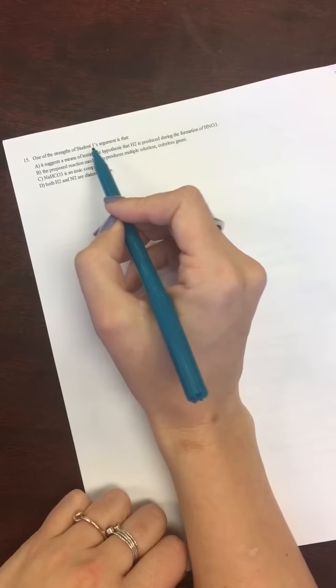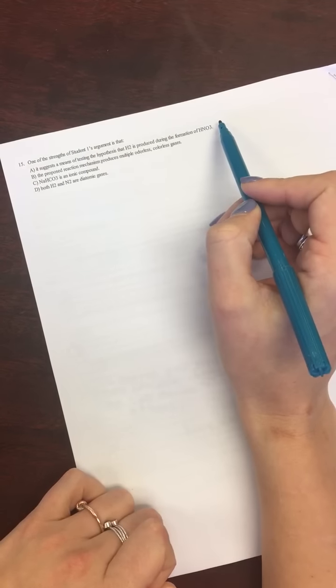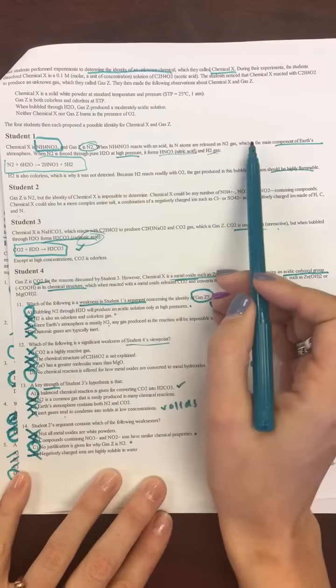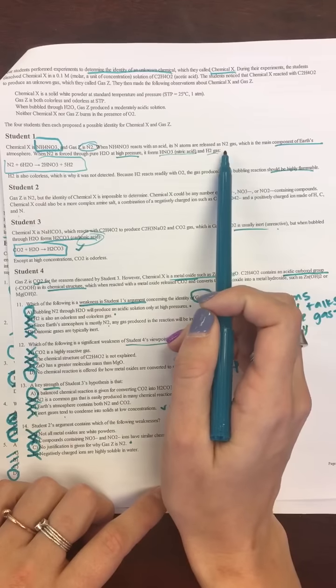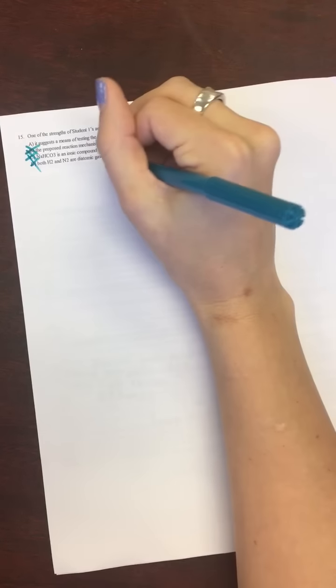Alright. Last one. One of the strengths of Scientist 1's argument is that. Suggest the means of testing the hypothesis. Let's see if it does that. When N2 is forced through pure H2O to high pressure, so that's a way to test it. That reaction is a way to test it. There you go. So, maybe that one. We'll leave that. The proposed reaction mechanism produces multiple odorless, colorless gases. That's not going to be a strength, because if they're odorless and colorless, that's going to be a bad thing, because then we can't tell them. NaHCO3 is an ionic compound. That's just a fact. That's not really a strength of the argument. And then both NH2 and N2 are diatomic gases. Again, just a fact. Not really a strength of the argument. This is a fact. So, this one is really, really chemistry heavy, by the way. All right. So, that means that our answer to 15 is A. And that's that.